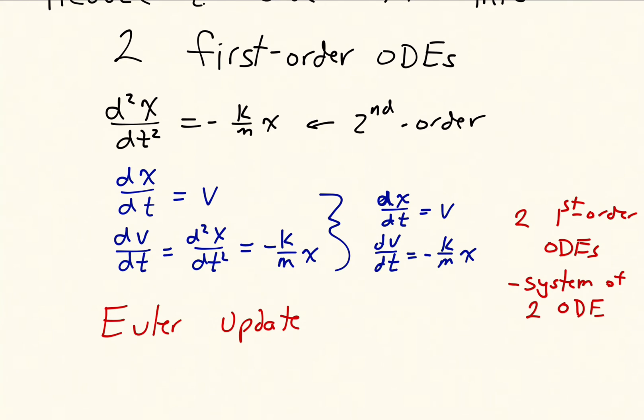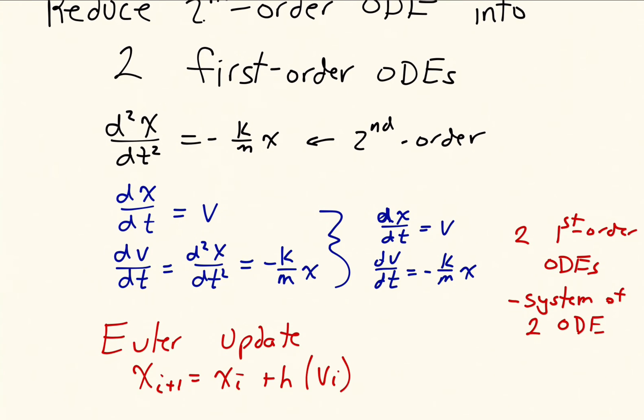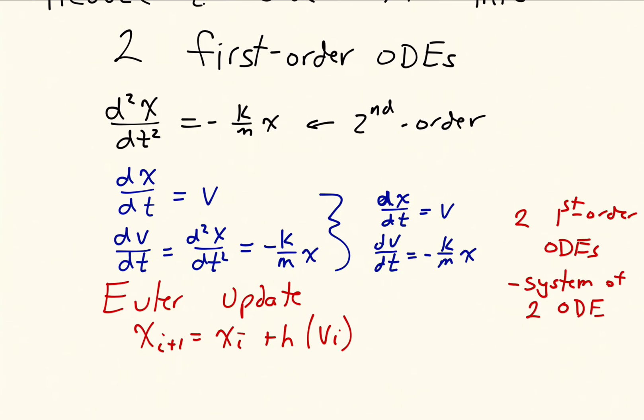With Euler's method, we can say x i plus 1 is equal to x i plus h times the right-hand side of the x equation, which is just v i. And our v update: v i plus 1 is equal to v i plus h times the right-hand side of that equation, which is minus k over m times x i. Now, those are the updates for the dependent variables.